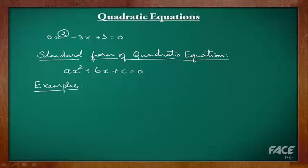Let's check out some more examples. 2x² + 5x + 3 = 0. Comparing this to the standard form of the quadratic equation, we have a = 2, b = 5 and c = 3.